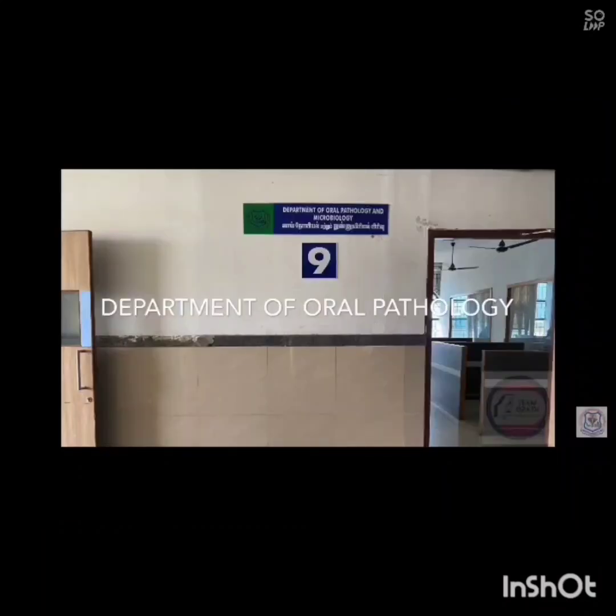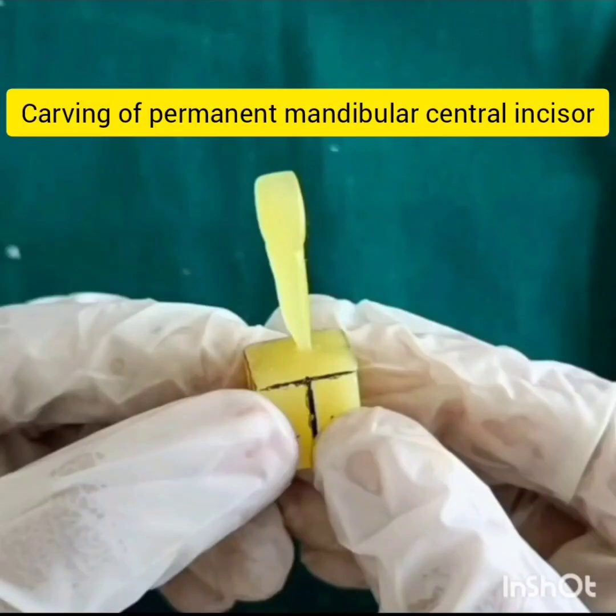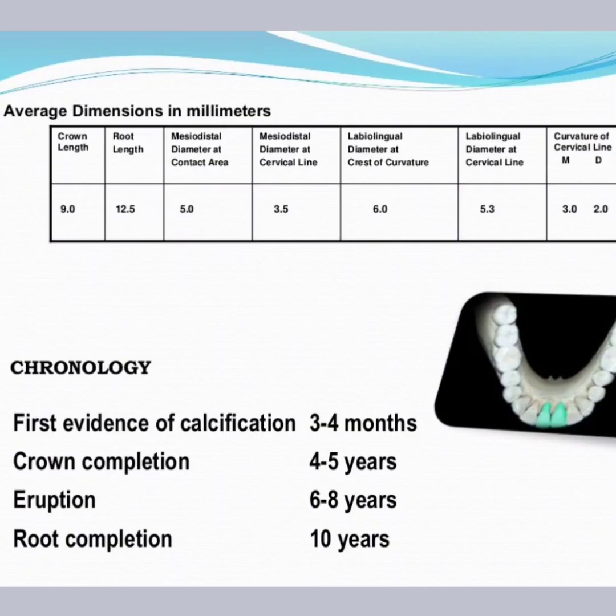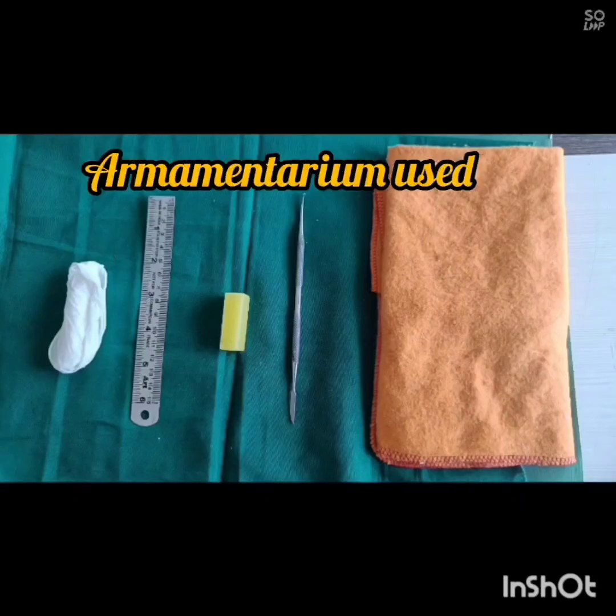Department of Oral Pathology. Carving of Permanent Mandibular Central Incisor. Formamentarium used: green cloth, gloves, steel scale, wax block, carver.